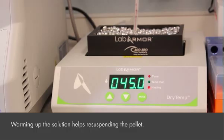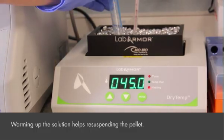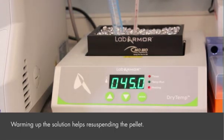Re-suspension may be aided by placing the tubes in a heat block or water bath at 45 degrees centigrade for 10 minutes followed by vortexing.